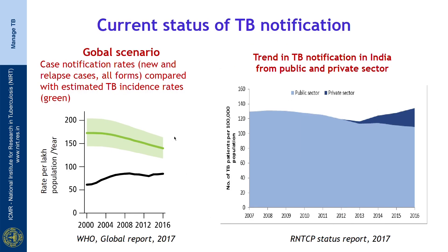If we look globally and in India and compare, there is a gap between the total notification rate and the expected incidence. Globally, the incidence rate is going down while notification was stationary, but in the last 3-4 years the notification rate has increased, as seen on the left side. On the right side, notification by the program was stationary over the last 6-7 years, then started declining, but has again started increasing with implementation of TB notification in India.